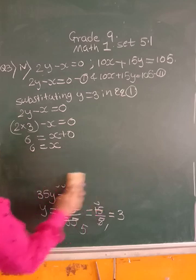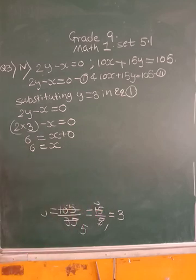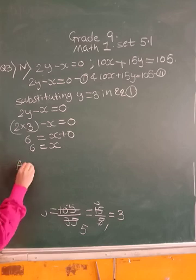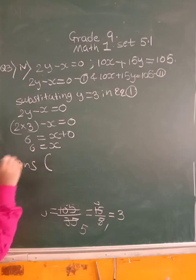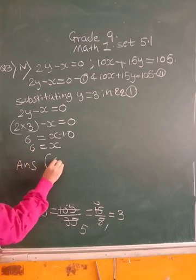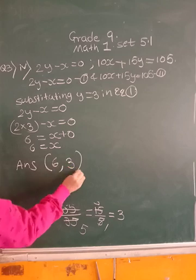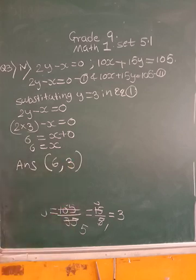So what is the answer? Solution. So answer you are going to get. First, you will always write, I am sorry. First you will be writing x coordinate and then you will be writing y coordinate. So answer is, you can make curved bracket or simple bracket doesn't matter. First is x is 6 comma and y is 3. So 6, 3 is the solution of the equation. Done.